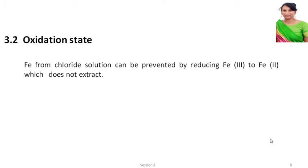The next factor is oxidation state. Oxidation state also plays a vital role. By adjusting the oxidation state, you can prevent extraction of a particular metal and selectively extract another. For example, iron from a chloride solution can be prevented from extracting by reducing Fe³⁺ to Fe²⁺. When you reduce Fe³⁺ to Fe²⁺, it will not get extracted from the chloride solution. So you can play with oxidation state to stop a particular element from extracting or to selectively extract another element.